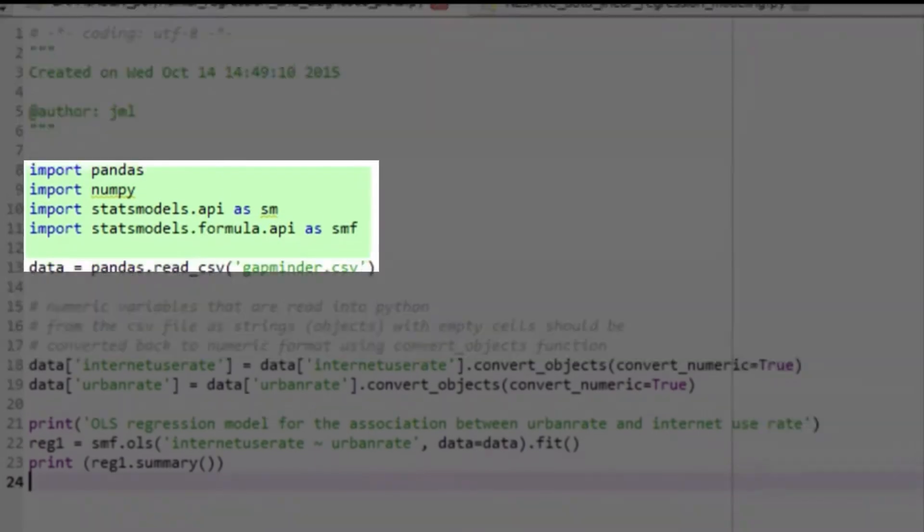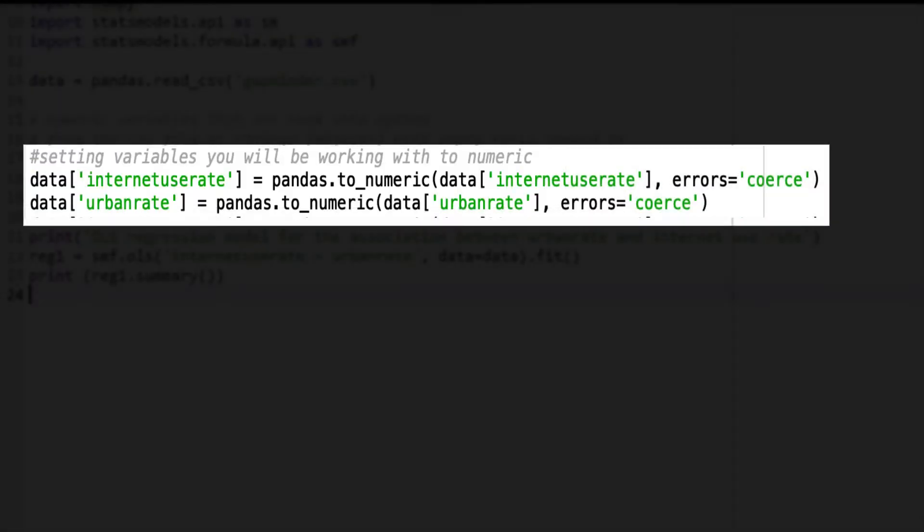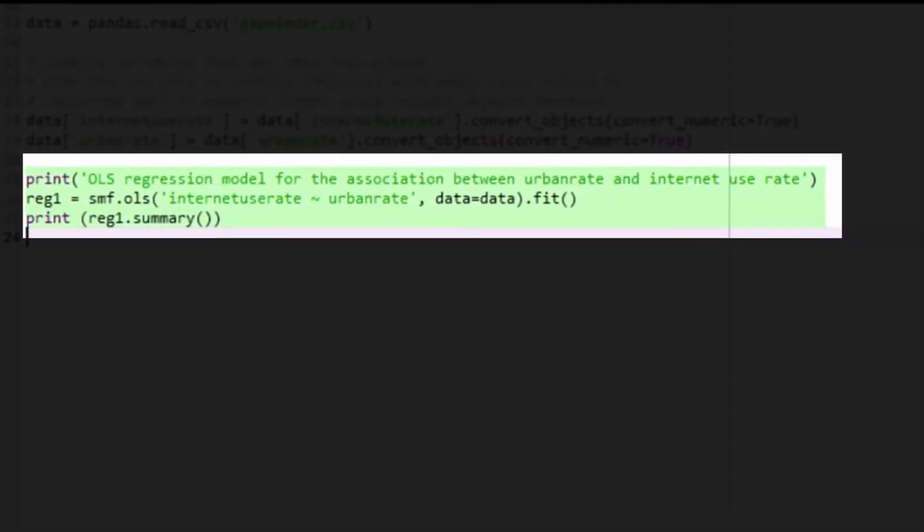Then, we call in the Gapminder dataset using the read.csv function and make sure that we convert the variable types to numeric with the pandas to_numeric function. We use the print function to have Python print the title OLS regression model for the association between urban rate and internet use rate, as part of the output that will be displayed in the IPython console in the lower right hand corner of the screen.